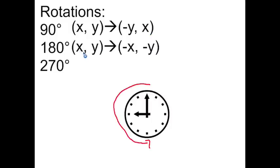For 180 degrees counter-clockwise, we're just going to change the sign of both x and y. We keep the original coordinates in their original locations — we don't switch them. We'll just change the sign. So if we had a positive 1 and a positive 1, this would become negative 1, negative 1.